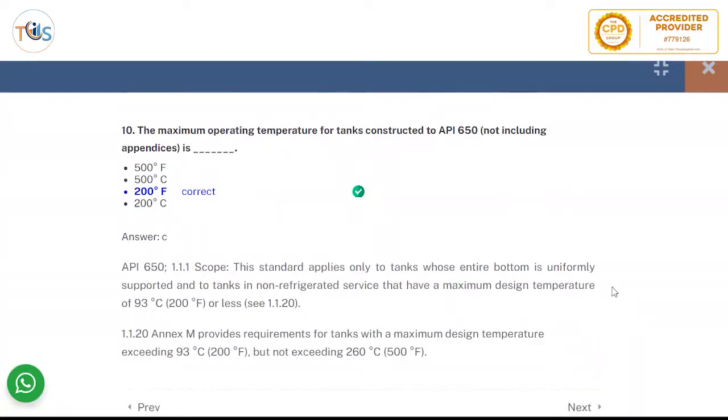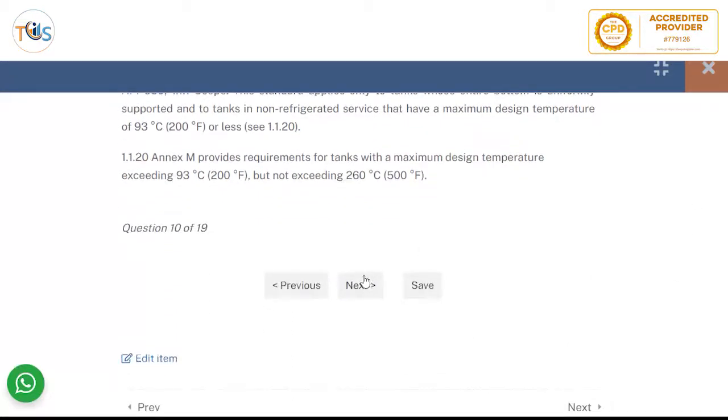Maximum operating temperature for tanks constructed to API 650 not including appendices. It should be 200 degree Fahrenheit or 93 degree centigrade. If it is more than 200 degree Fahrenheit up to 500 degree Fahrenheit, 260 degree centigrade, then Appendix Annex M would be applicable.